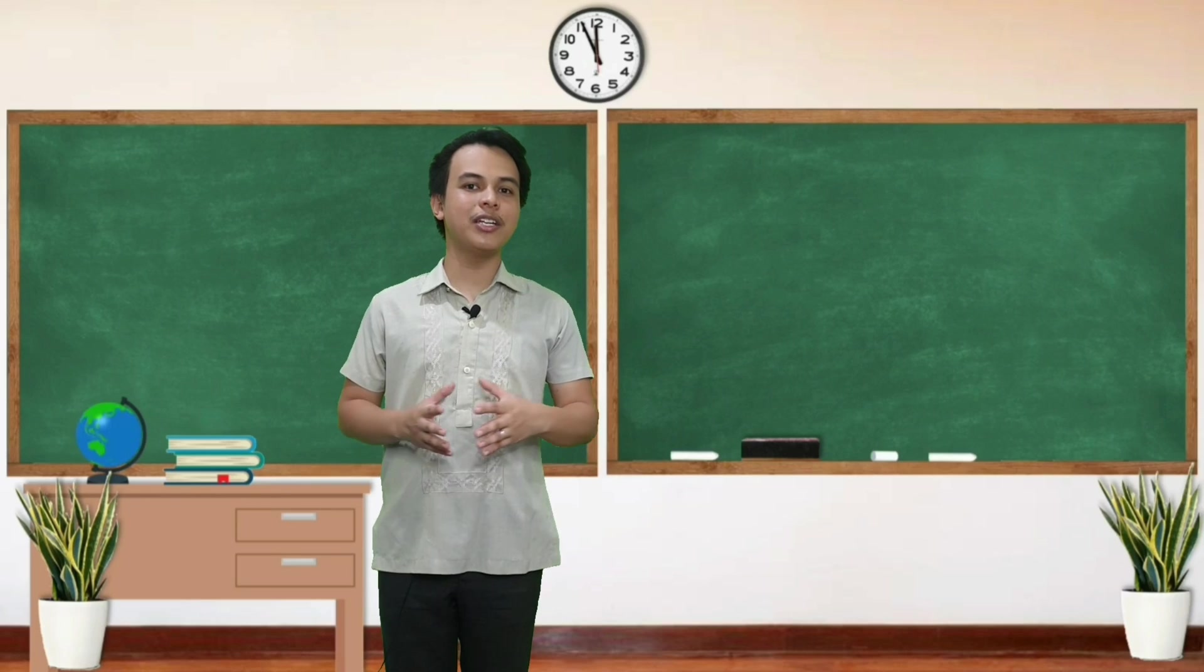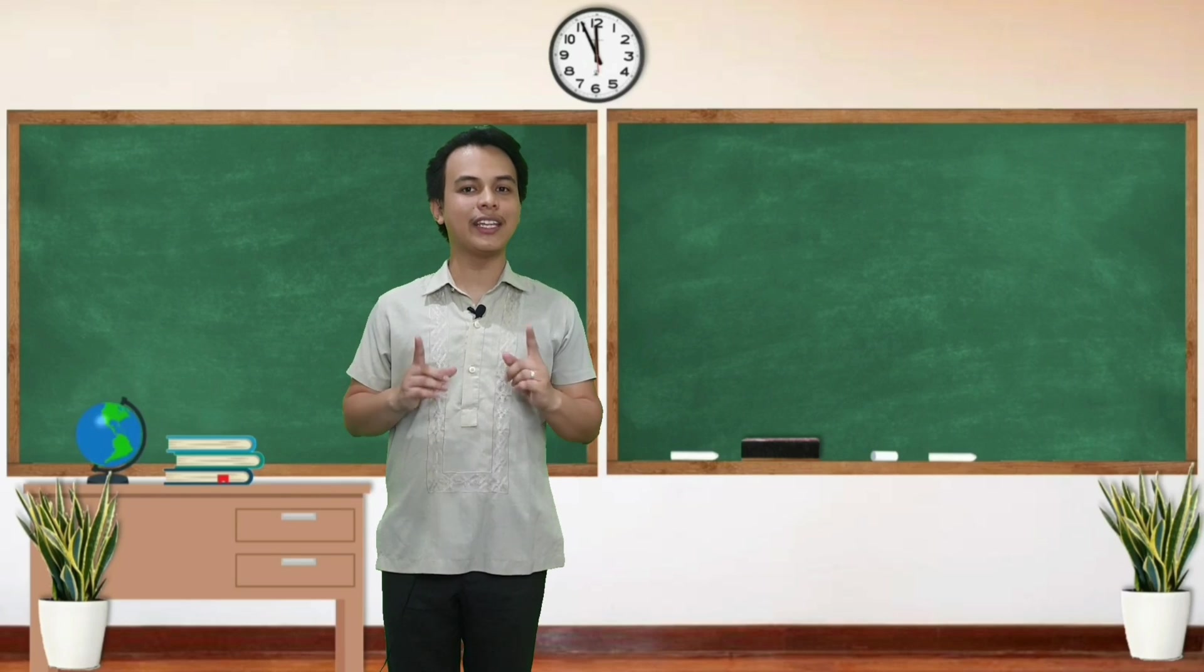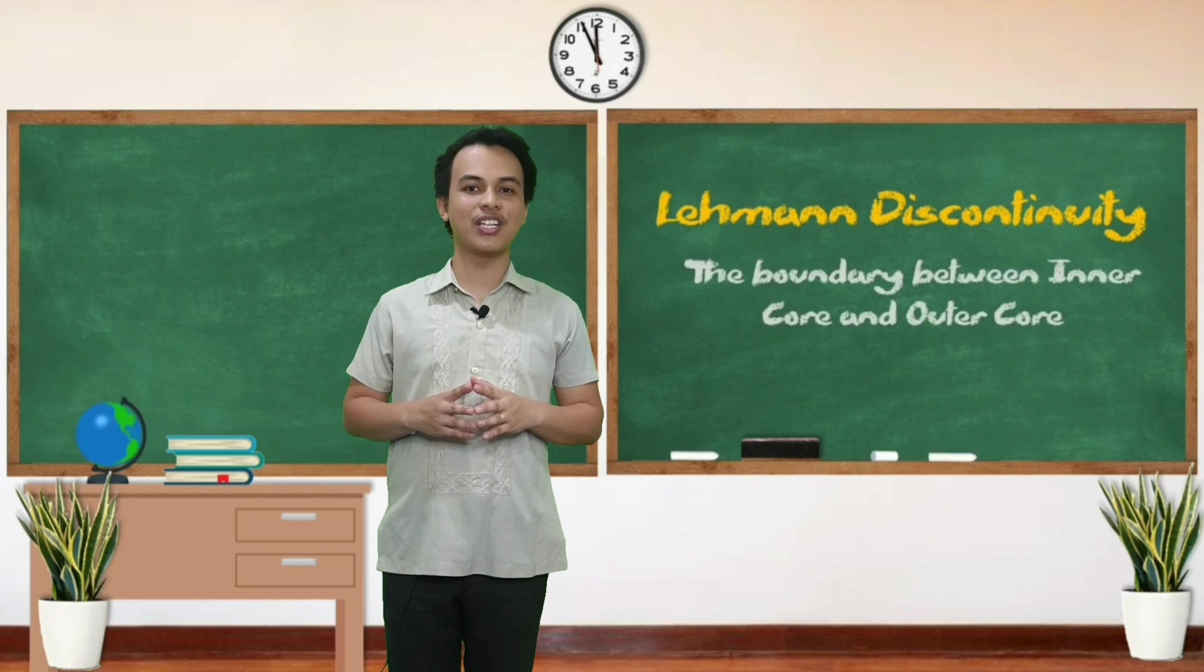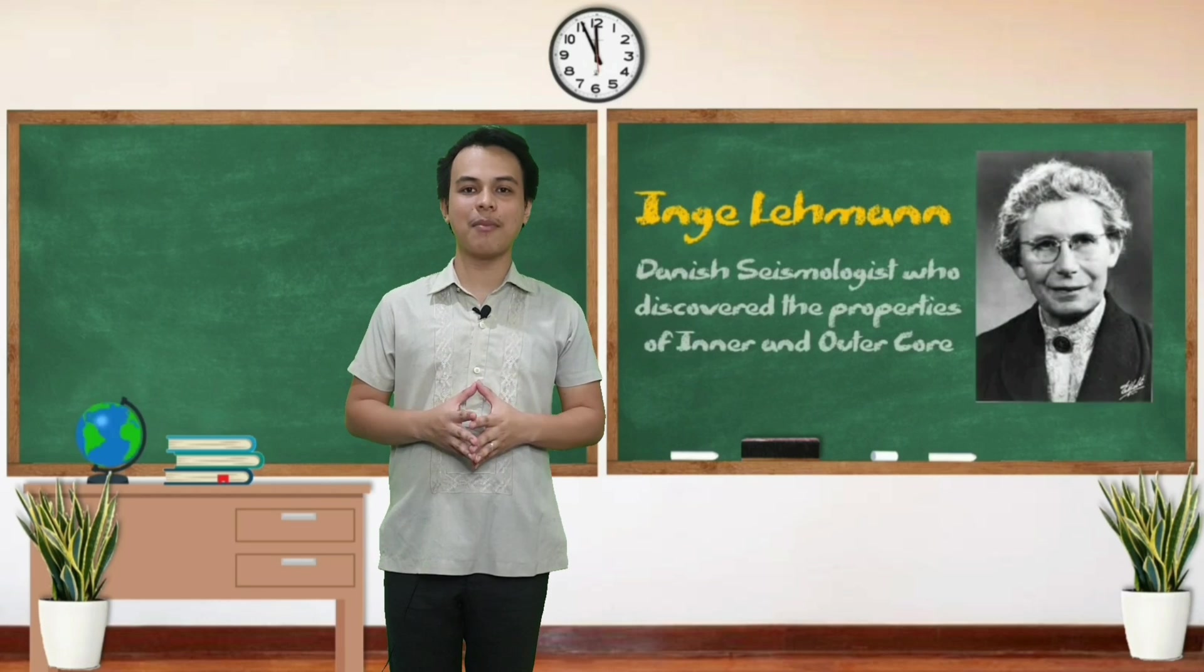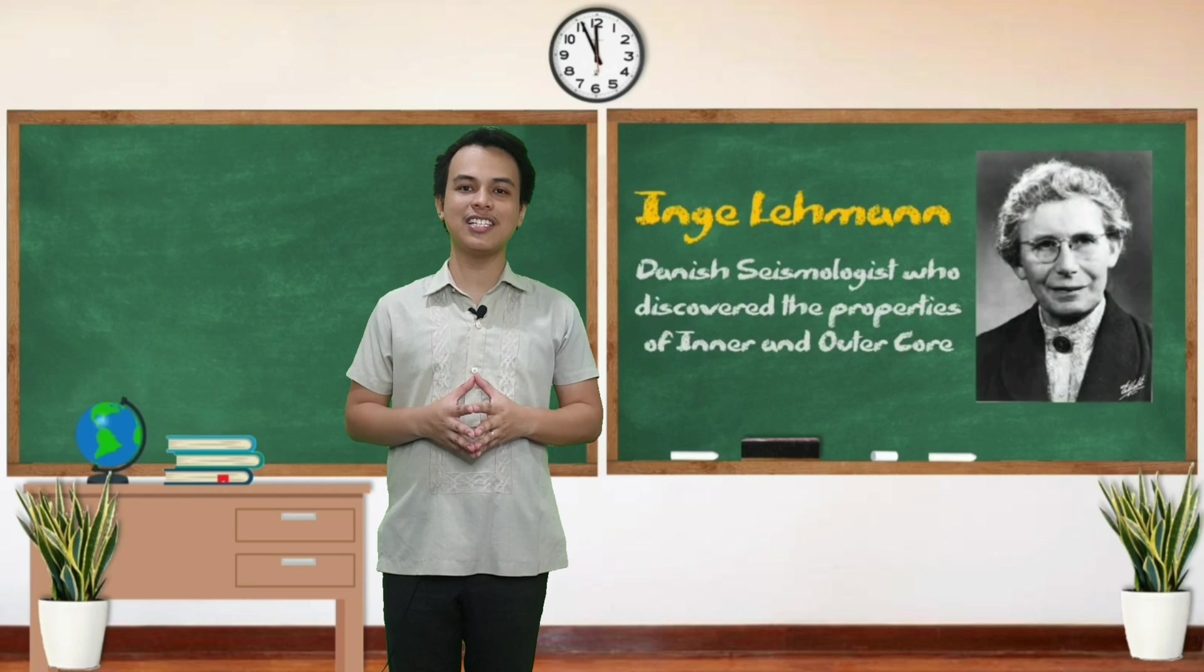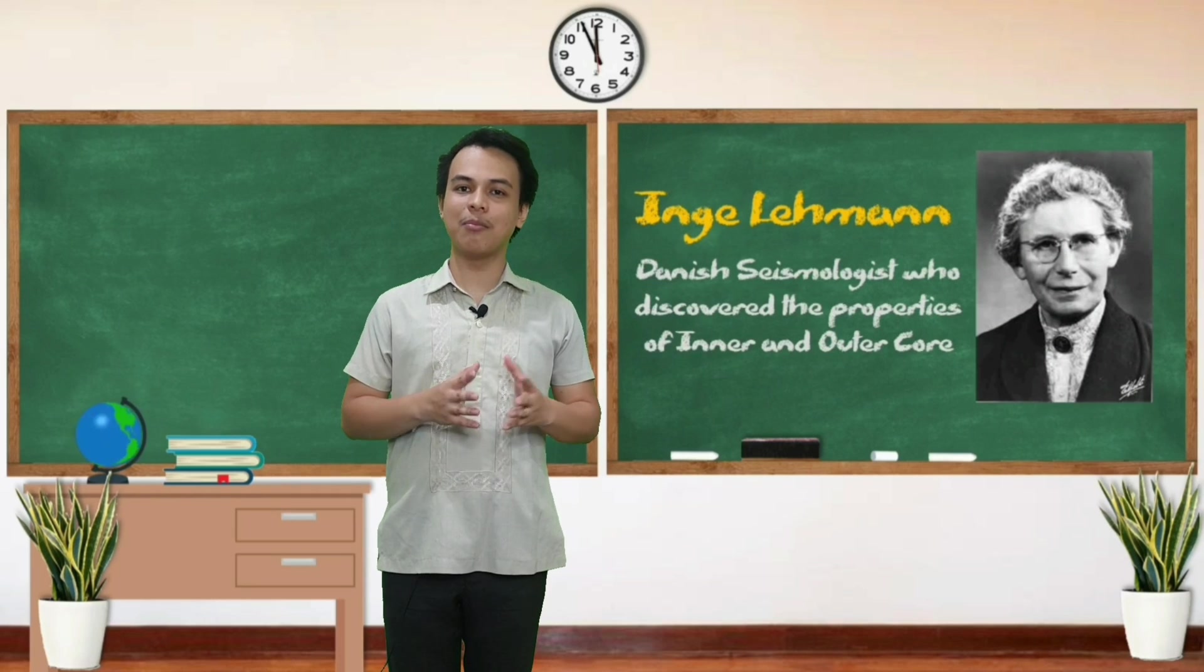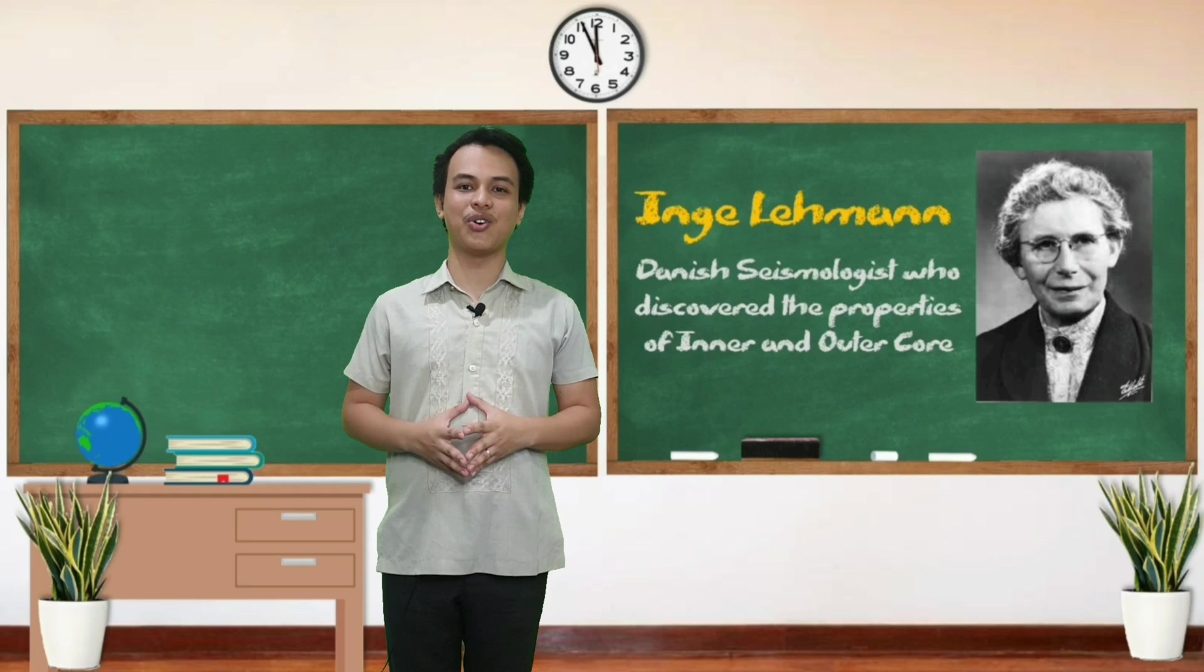Ang boundary between inner and outer core ay tinatawag natin na Lehmann discontinuity. It is named after Inge Lehmann who is a Danish seismologist na nakadiskubre ng pagiging molten ng outer core at ang pagiging solid ng inner core.